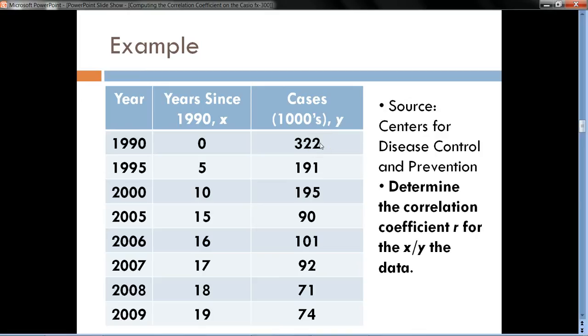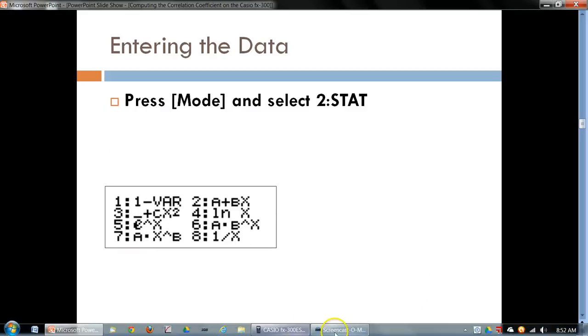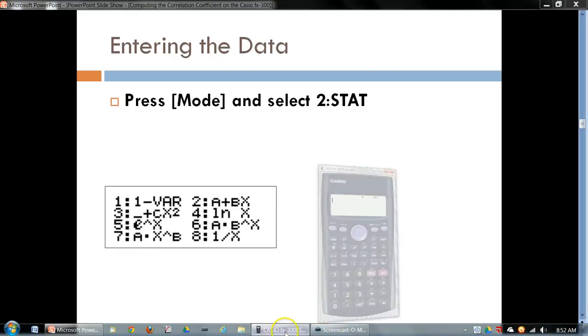So notice here, in 1990, there were 322,000 cases. In 1995, there were 191 reported cases, and so on. So we want to determine the correlation coefficient between X and Y here. The first step is to enter the data. So we have to set up our calculator so that we can do so.